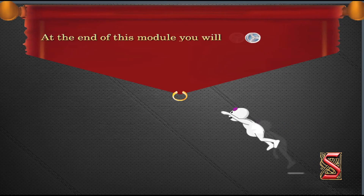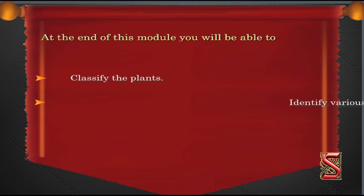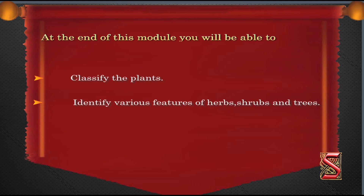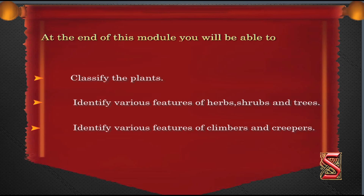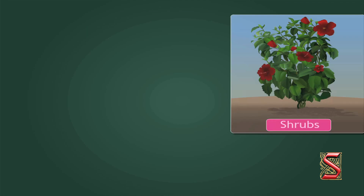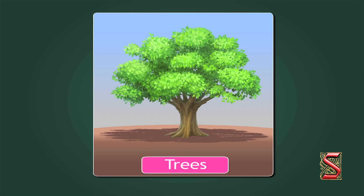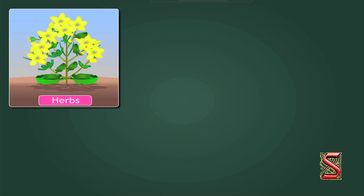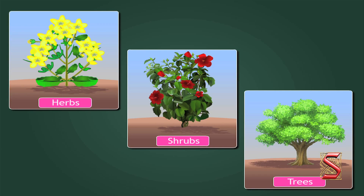At the end of this module, you will be able to classify the plants, identify various features of herbs, shrubs and trees, and identify various features of climbers and creepers. Let's learn about different types of plants. Plants can be mainly classified as herbs, shrubs and trees. Let's observe various features of these plants closely and know more about them.